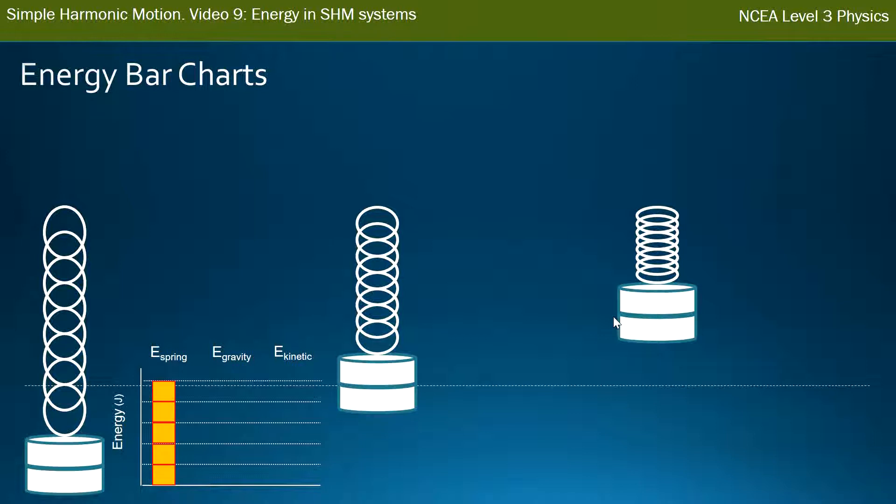As it's moving through the equilibrium point, it's now moving, so it's going to have some kinetic energy. It's also higher up, so it's going to have some gravitational energy, and the spring is not as compressed as before, so it has less spring energy. Now the important thing to note is that the total of these graphs so far is still five bars. The five bars of spring energy from the first graph has been distributed around gravity and kinetic in the second.